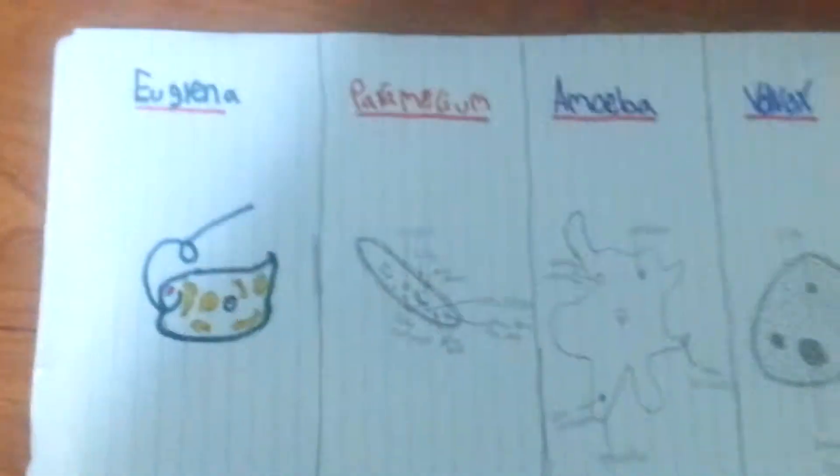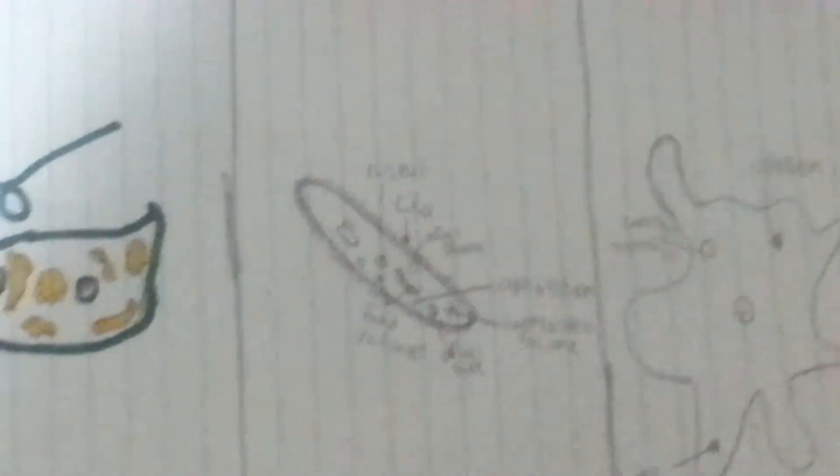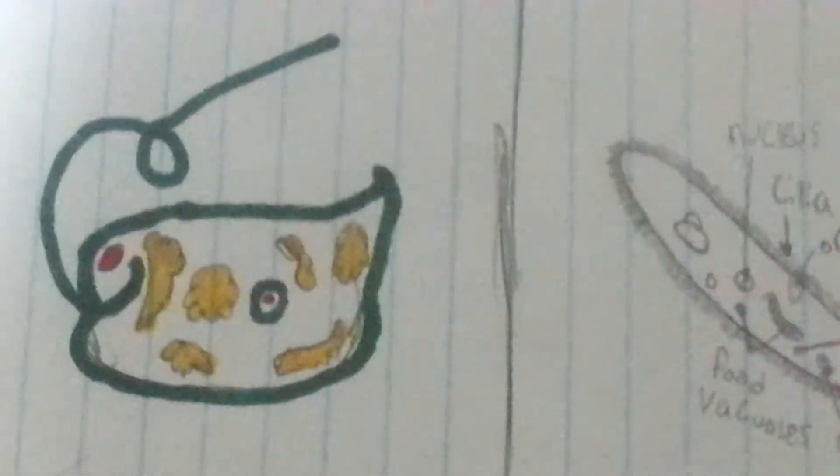Then we have the paramecium, which has a nucleus, of course, a cilia, an oral groove, a food vacuole, cytoplasm, and a contractile vacuole.